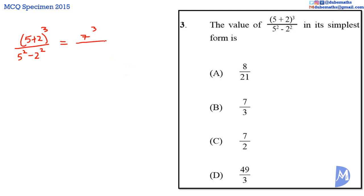In the denominator with BODMAS, we work out the powers before subtracting. 5 squared equals 25. 2 squared equals 4. 25 subtract 4 equals 21. So we have 7 cubed over 21.